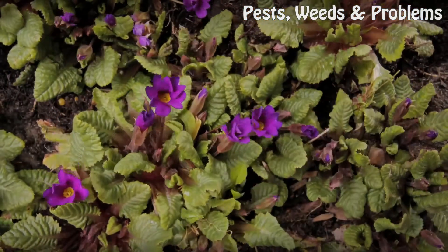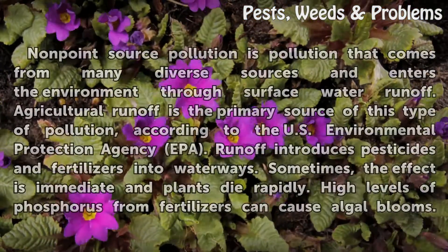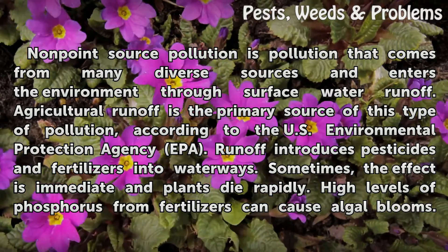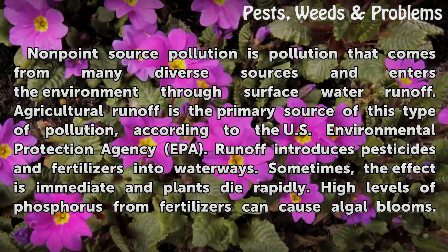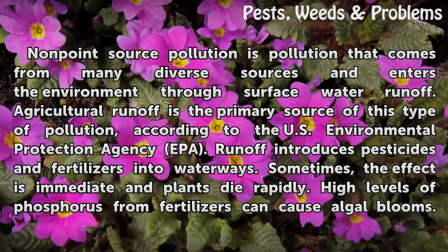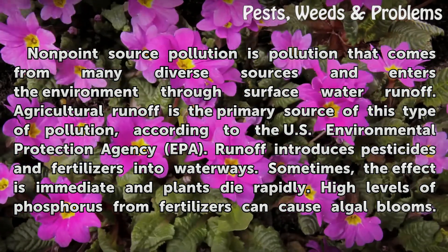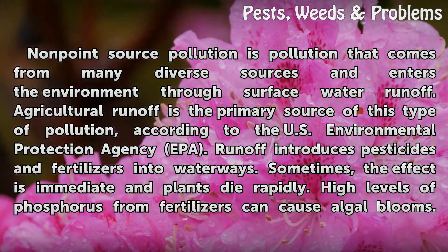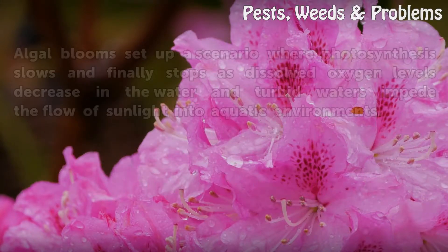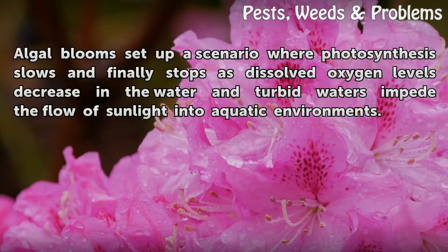Nonpoint source pollution is pollution that comes from many diverse sources and enters the environment through surface water runoff. Agricultural runoff is the primary source of this type of pollution, according to the U.S. Environmental Protection Agency (EPA). Runoff introduces pesticides and fertilizers into waterways. Sometimes the effect is immediate and plants die rapidly. High levels of phosphorus from fertilizers can cause algal blooms, which set up a scenario where photosynthesis slows and finally stops as dissolved oxygen levels decrease in the water and turbid waters impede the flow of sunlight into aquatic environments.